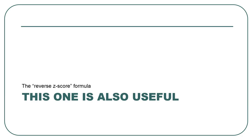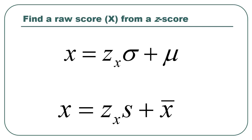Here's another useful formula. If you solve that equation for x instead of for z, you get what I'd call the reverse z-score equation. Instead of being given a raw score and asked to find the z, you're given the z-score along with the mean and standard deviation and asked to find the original raw score. You just plug those values in — the mean, standard deviation, and z-score.